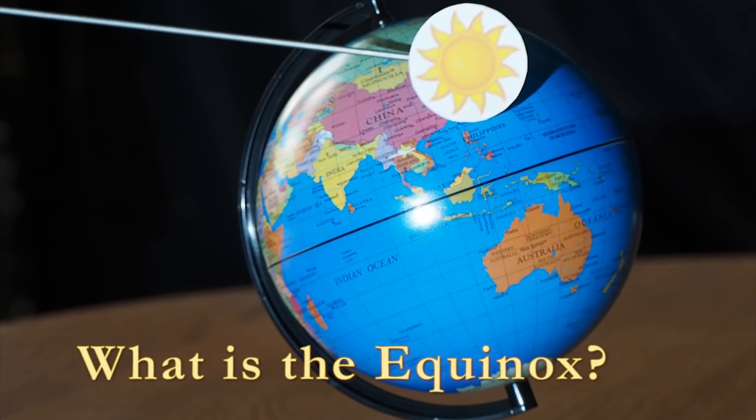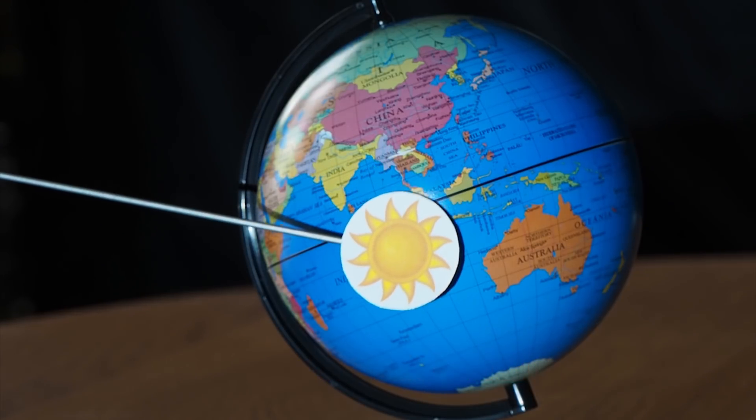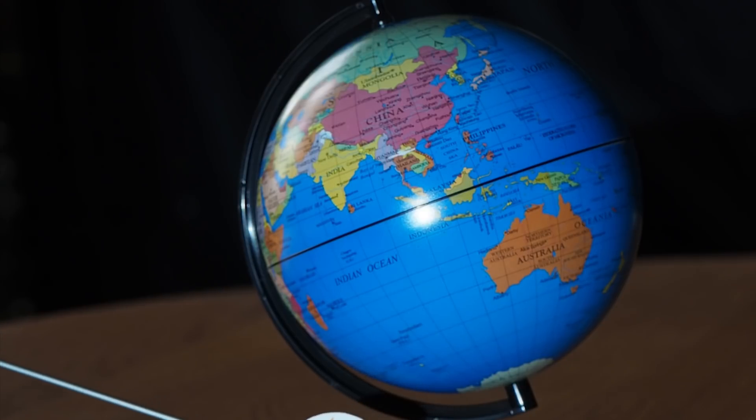For astronomers, the equinox is the moment when the plane of the Earth's equator passes through the centre of the sun's disk. This occurs twice each year around March 20th and September 23rd.